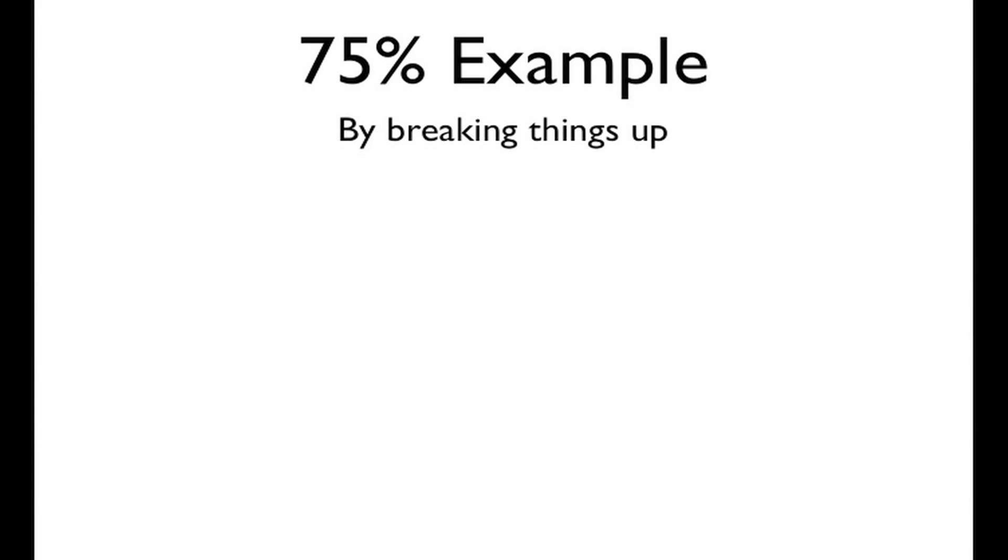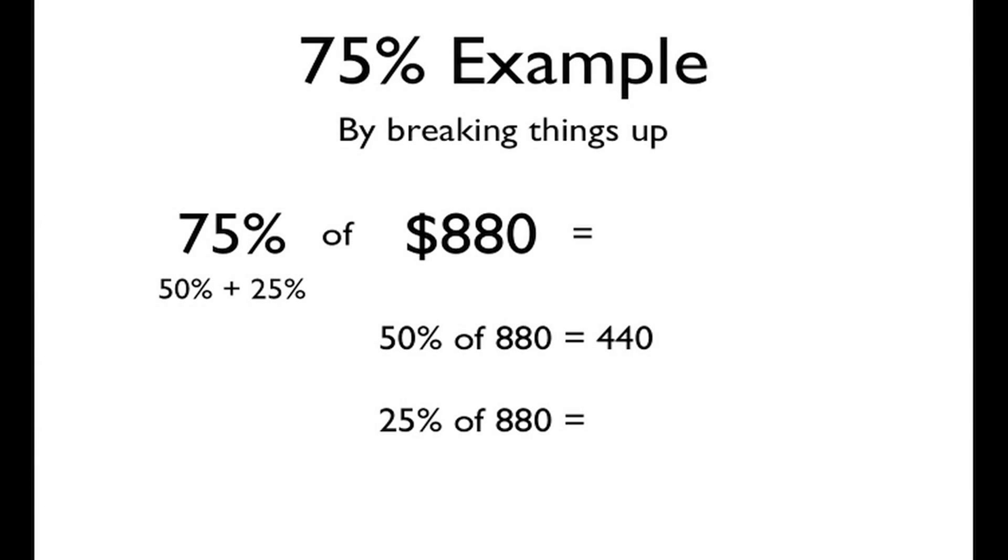We're going to try 75% now, doing the same thing, breaking it up. Now, there's a couple different ways to break up 75%. I've chosen 50% plus 25% for this example. 50% of 880 gives us 440. Now, we need to divide 25% of 880. Now, remember, 25% is just half of 50%. Well, we already solved 50%, so let's just take half of that. 440 divided by 2 gives us 220. That was pretty easy.